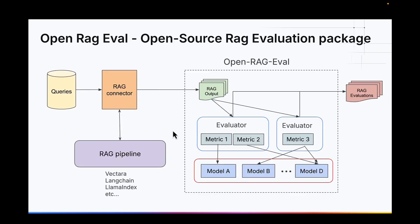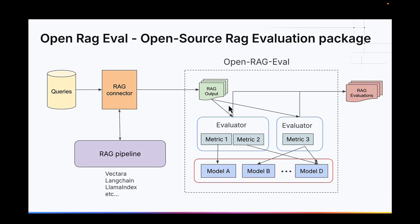This is an architecture view of what it does. You start with a set of queries — it could be 10, 100, or 1,000 queries that you've collected that are important for your RAG system. We have a RAG connector that collects all the actual information: the actual chunks and the actual answers generated by a RAG pipeline. We have one for Vectara, for LangChain, for LlamaIndex, and a growing number of other connectors. Those connectors generate RAG outputs. From there, you run the actual evaluation, which runs a bunch of metrics. Metrics are grouped into evaluators, and those evaluators generate RAG evaluation files that have everything you need to evaluate your RAG pipeline.